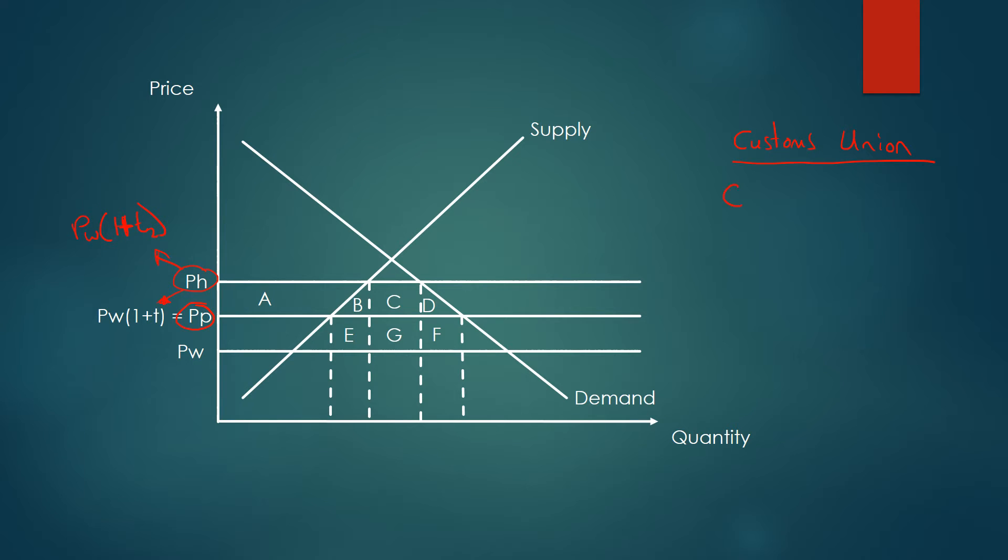We can break this down into consumer surplus to start. The price has fallen from pH to PP if we formed a customs union, so that leads to an increase in consumer surplus by A, B, C, and D.